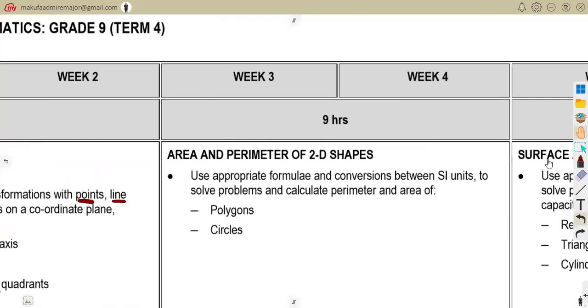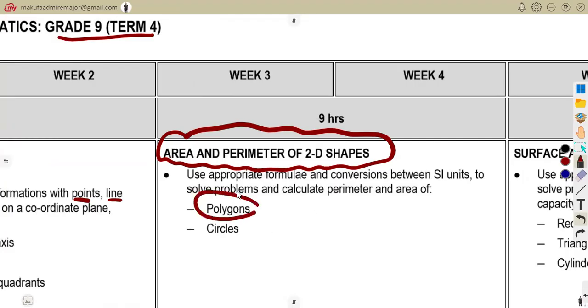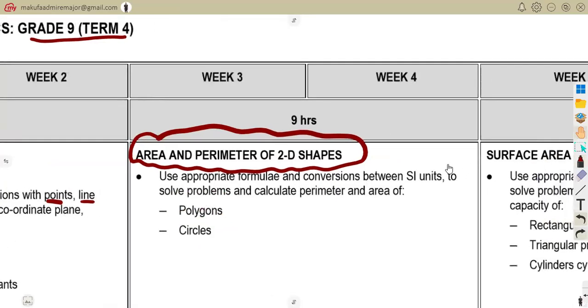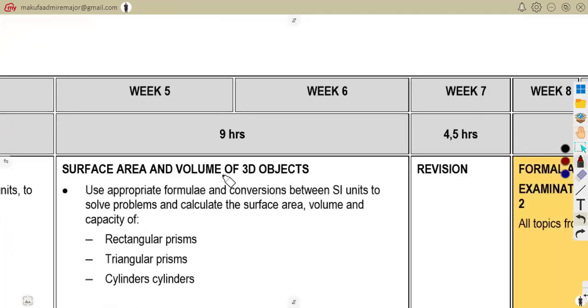Also, we are going to be talking about area and perimeter of 2D shapes in this Term 4. You need to know how to find perimeter and areas of polygons and also working with the circles. Then also your surface areas and also the volume of 3D objects.